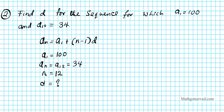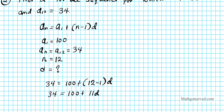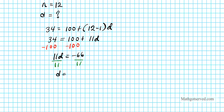We plug everything into the formula: 34 = 100 + (12 − 1)d, which gives 34 = 100 + 11d. Subtracting 100 from both sides gives 11d = −66. Dividing both sides by 11, we get d = −6. This means our arithmetic sequence decreases by 6 every time.